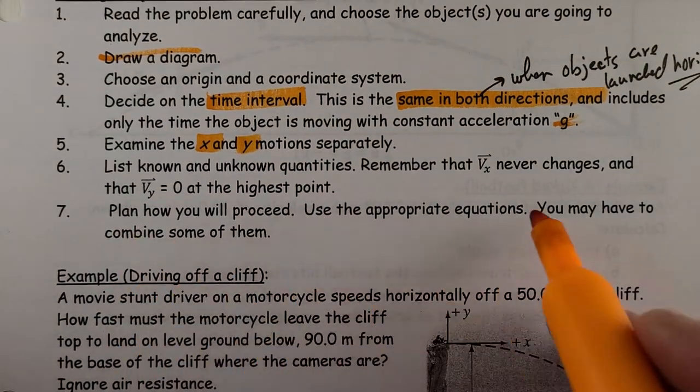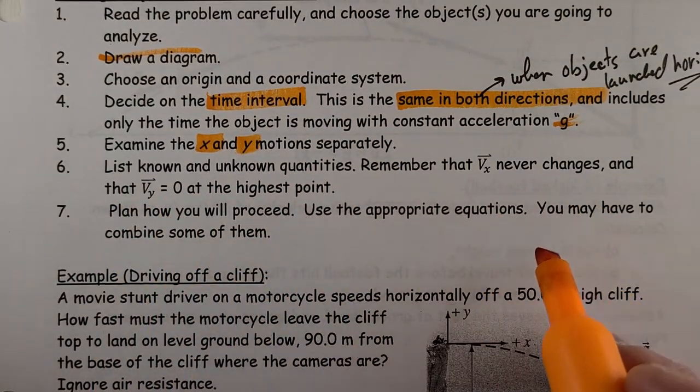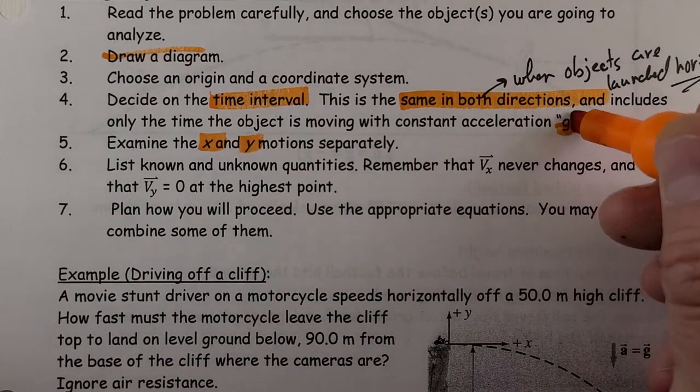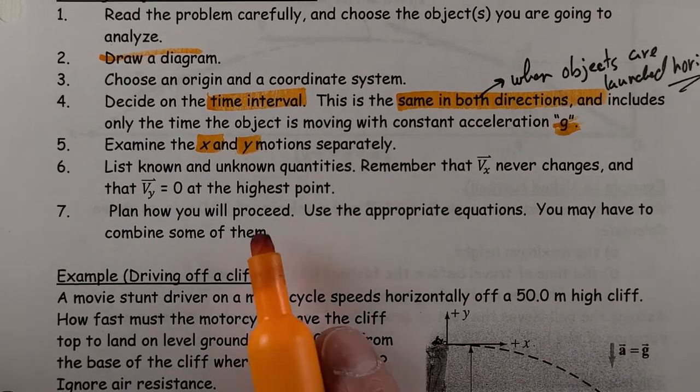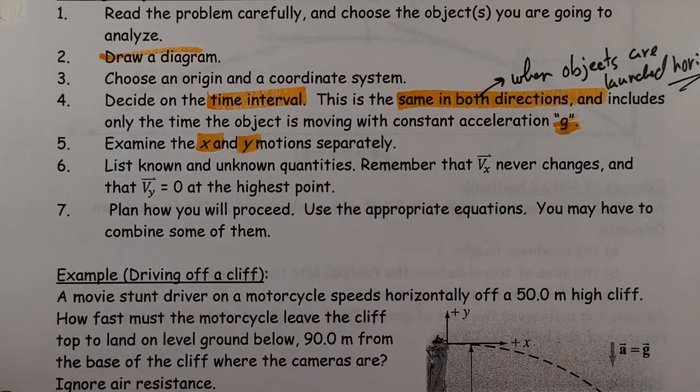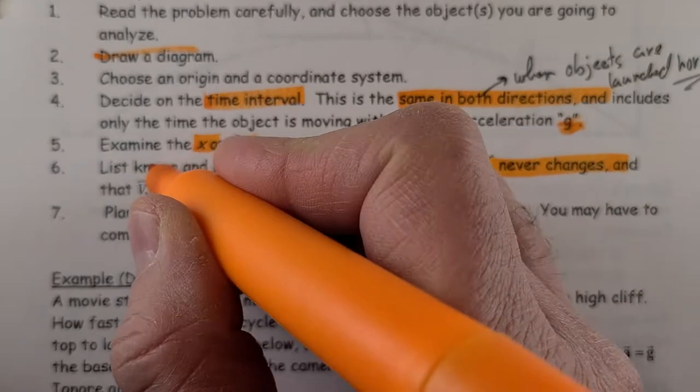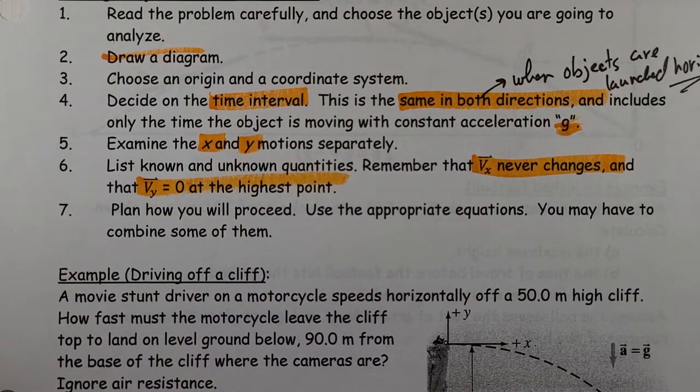X has constant velocity, while y is speeding up and slowing down due to acceleration due to gravity. List the known and unknown quantities. Remember that vx never changes.